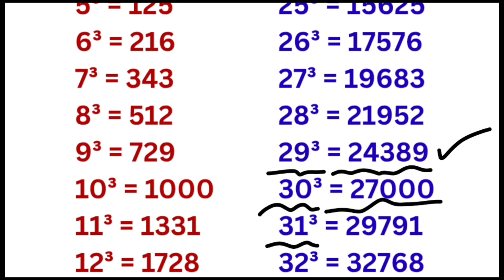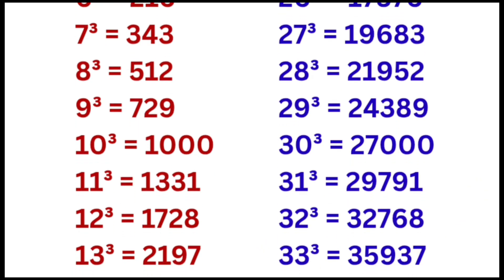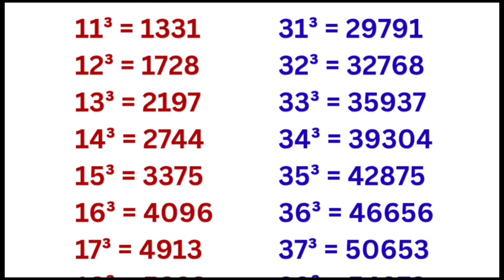Cube of 31 is equal to 29791, cube of 32 is equal to 32768, cube of 33 is equal to 35937, cube of 34 is equal to 39304.